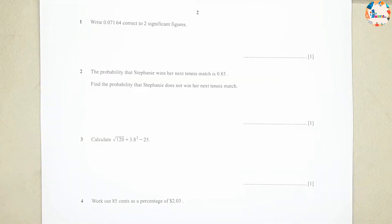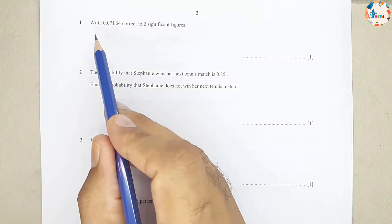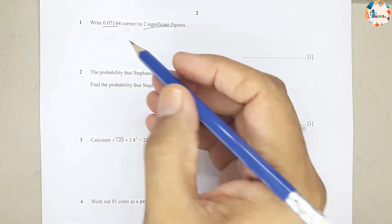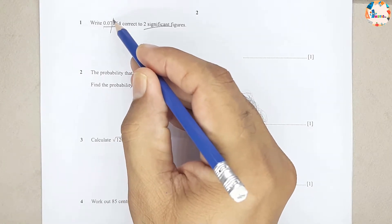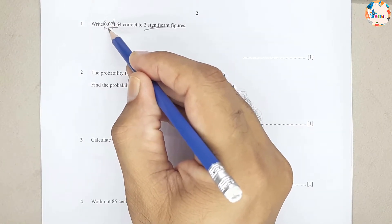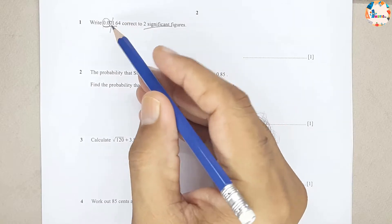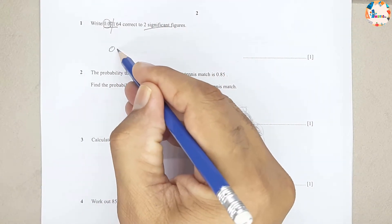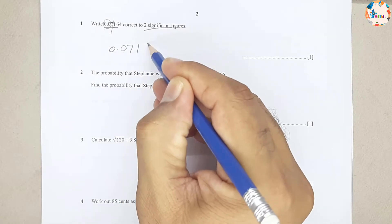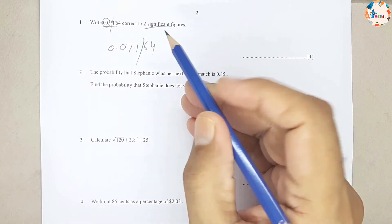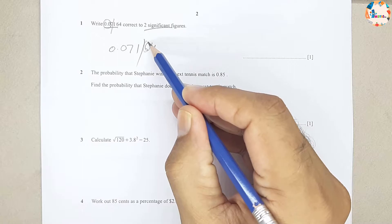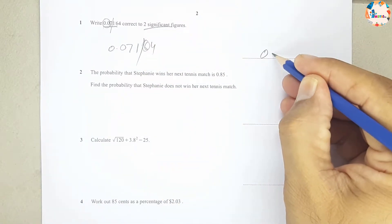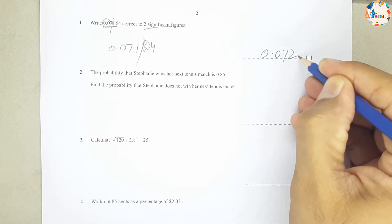Question number 1: write this number correct to two significant figures. The two leading zeros are non-significant, so the significant digits are seven and one. Since the next digit is more than five, we add one, giving an answer of 0.072.